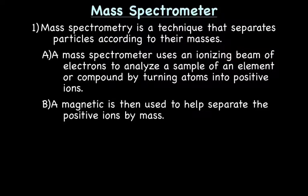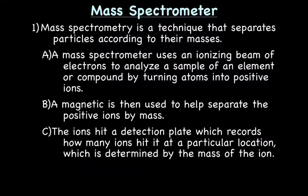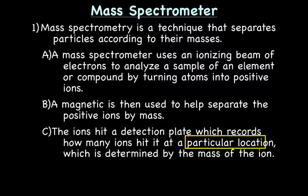These ions are then accelerated through a tube, and there's a magnet that helps to separate the positive ions by mass. The ions then hit a detection plate, which records how many ions hit at a particular location, and those locations on the detection plate are mapped out, allowing us to determine the mass.